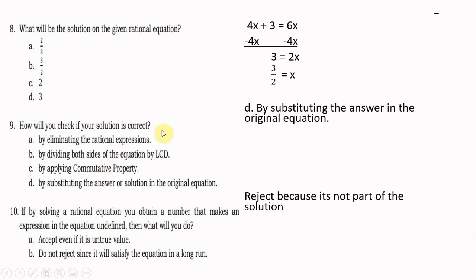Number 9: How will you check if your solution is correct? You go back to the original equation and substitute the value of x. If it comes out true, your solution is correct. The answer is letter B: by substituting the answer in the original equation.